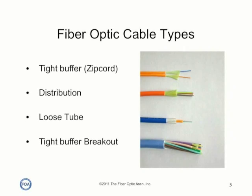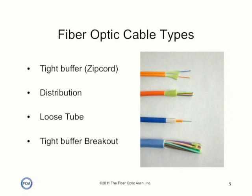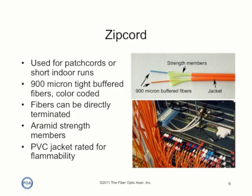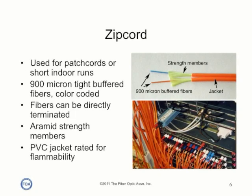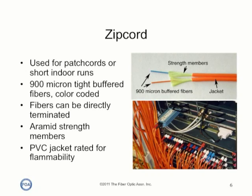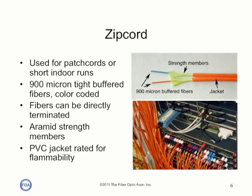Outdoors, loose tube cable is used to allow filling the cable with water blocking materials to protect the fibers from moisture. Zip cord is just two simplex cables attached by a thin web for convenience, since connections require two fibers transmitting in opposite directions. Zip cord is primarily used for patch cords or short indoor runs.